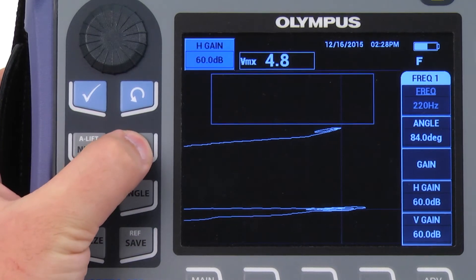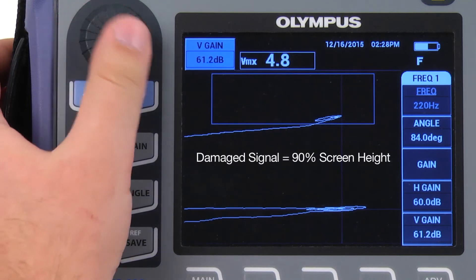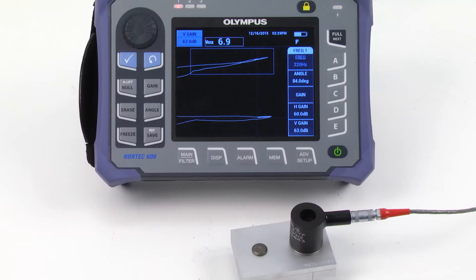Press Gain three times to change the V-gain. Set the gain so that the damage signal reaches 90% of the screen height. Press Freeze and Full Next to enter full screen mode.